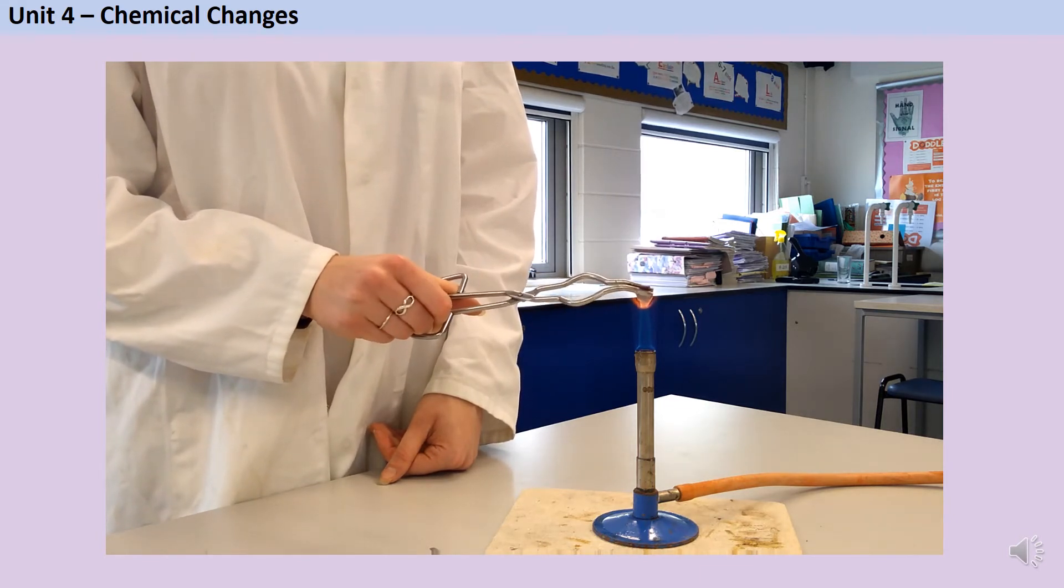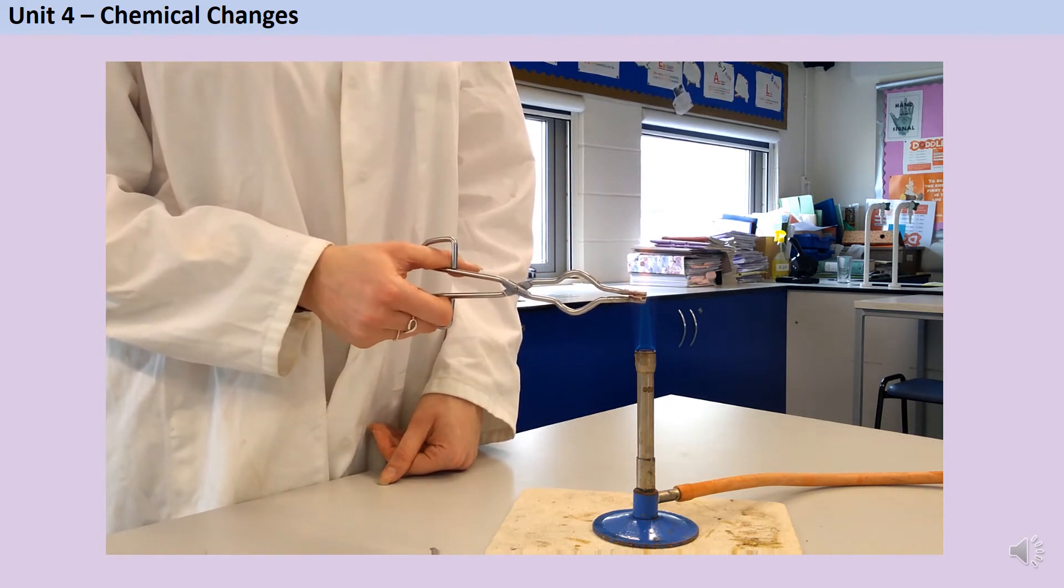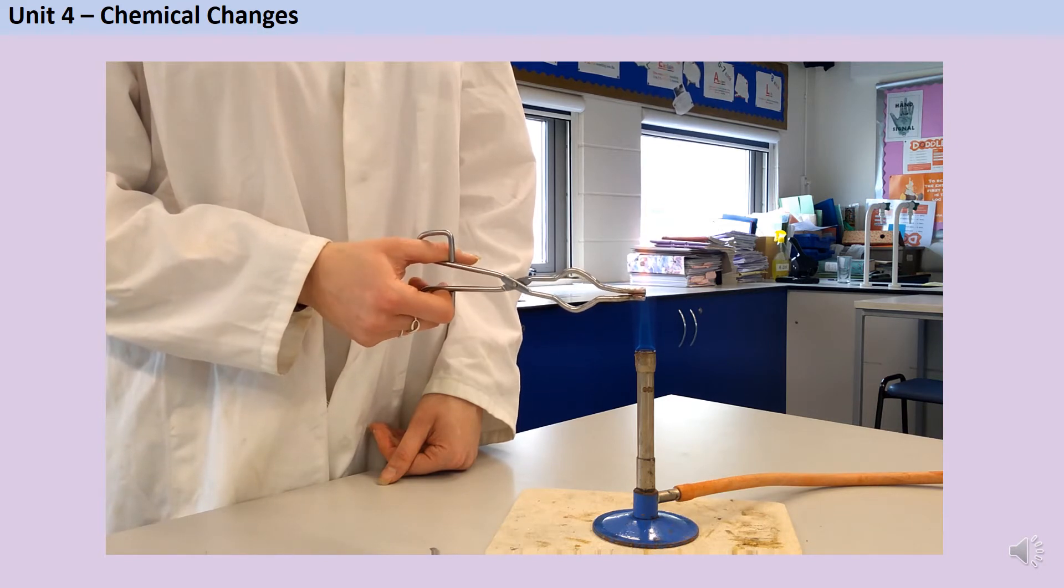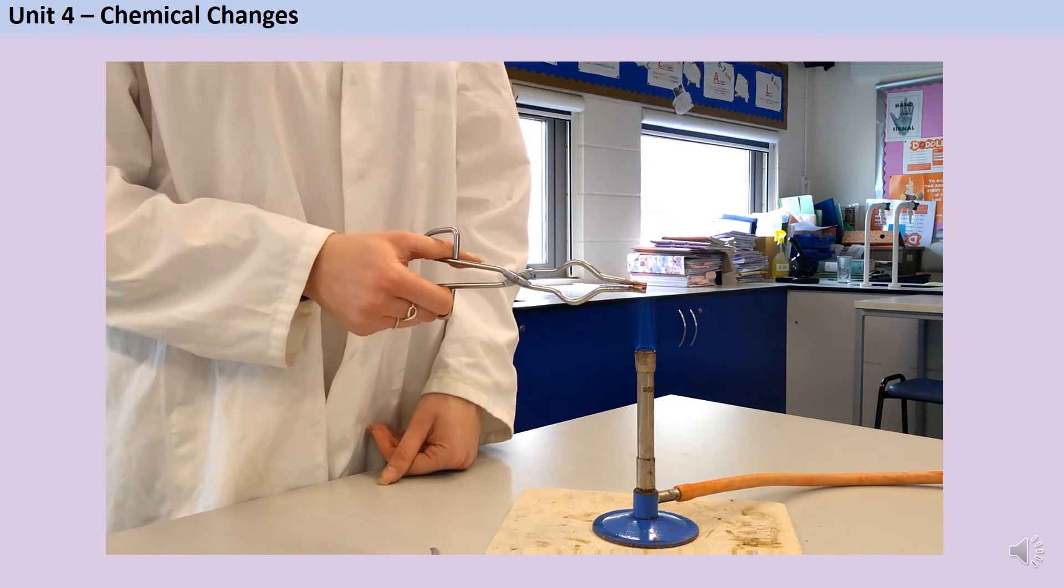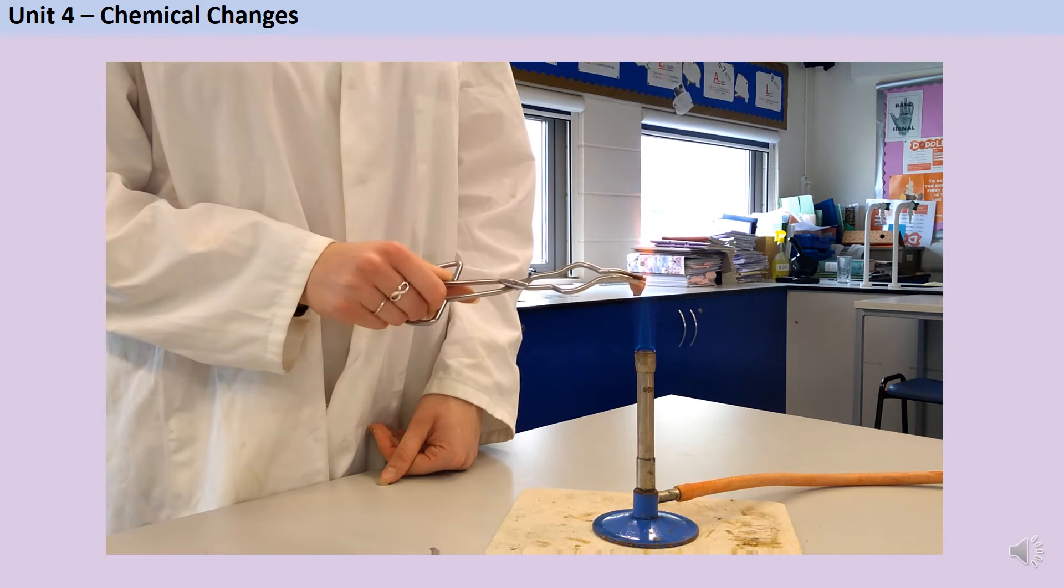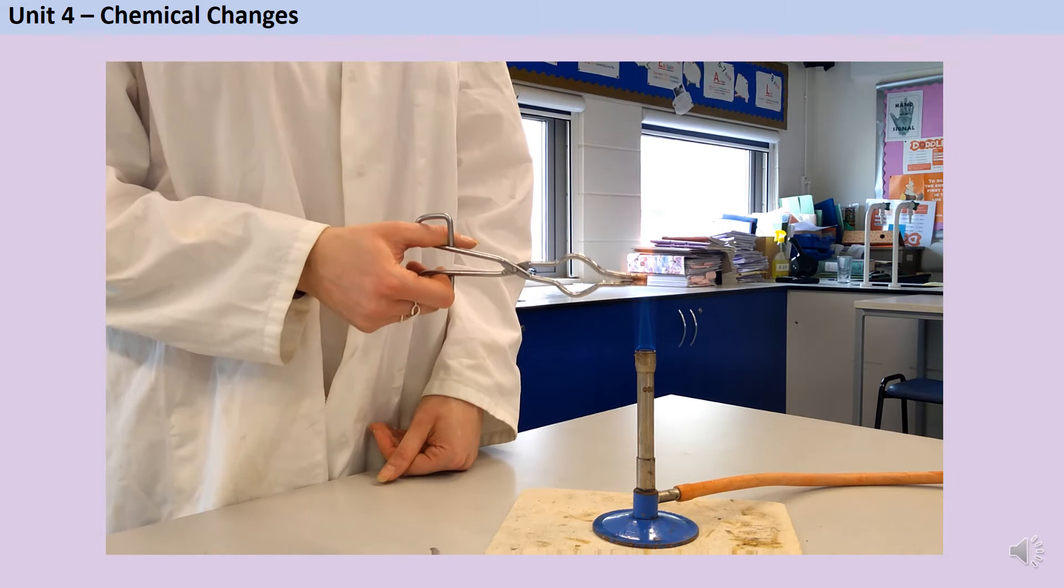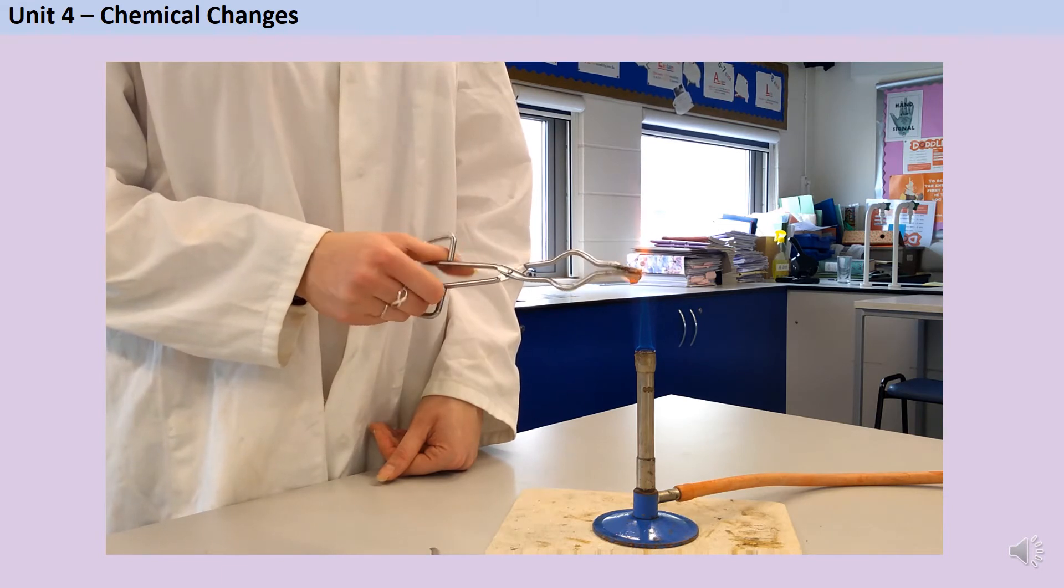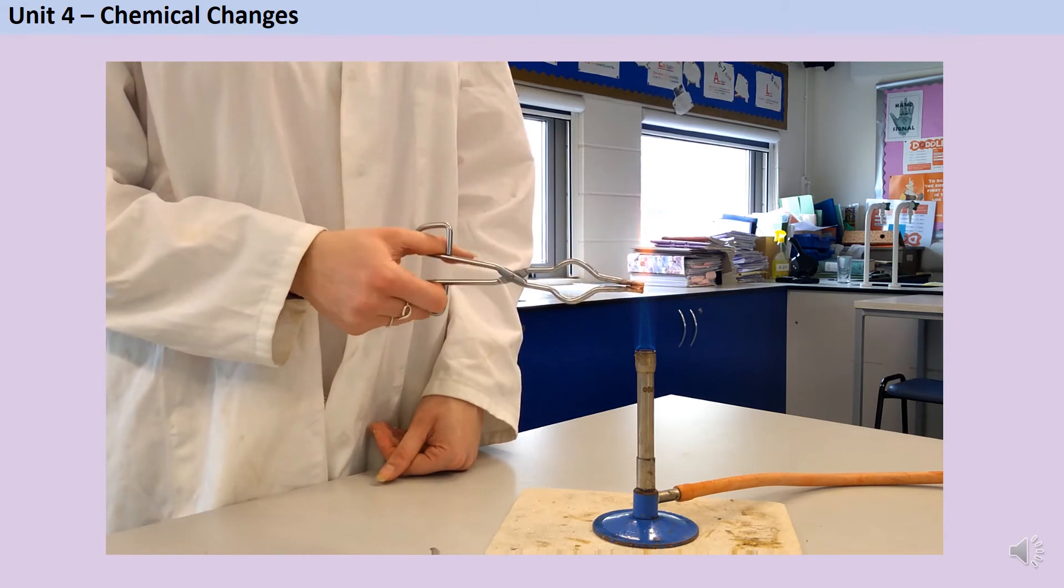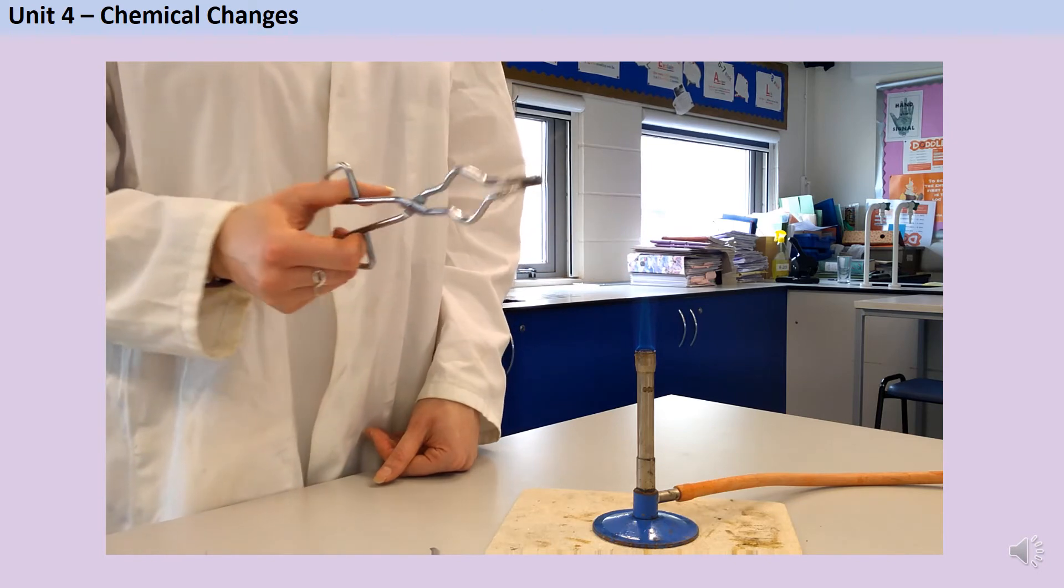Together they begin to form a compound, a metal oxide. In this instance, copper oxide. So you can see that my copper is changing colour. And over time, it gets darker and darker. But even using the Bunsen burner, which is very hot and provides a lot of energy, this is a very slow process.